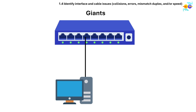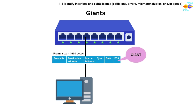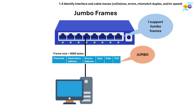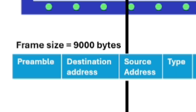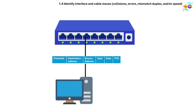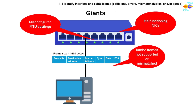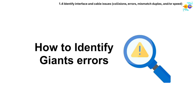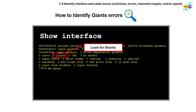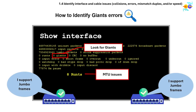A giant is an Ethernet frame larger than the standard MTU — usually greater than 1518 bytes for standard Ethernet — and it gets dropped. Some equipment supports jumbo frames, which allow a larger payload; a common jumbo frame size is 9000 bytes. Causes of giants include misconfigured MTU settings, malfunctioning NICs, or jumbo frames that are not supported or mismatched. Use the show interface command and look for the giants counter. If using jumbo frames, make sure both devices support them.